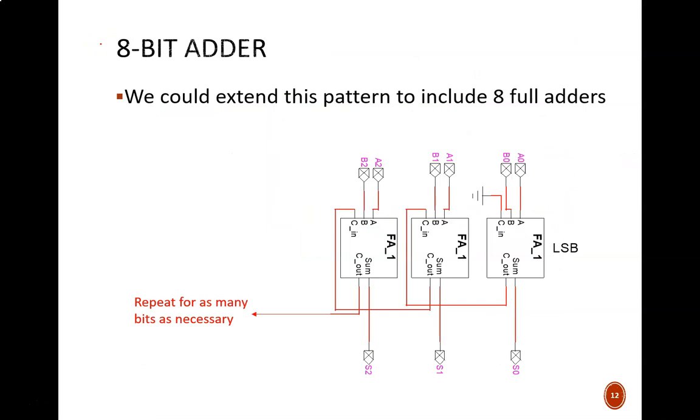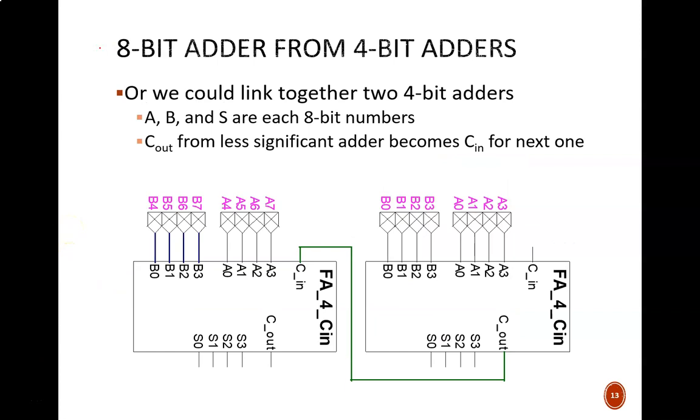What if we needed an 8-bit adder? We could certainly extend the pattern we already developed. We would need one full adder for every bit in our inputs, and we simply connect each cout to the next cn. In fact, you could do this for 16, 32, 64, or any number of bits. But even better is if we take advantage of the 4-bit adder we just created.